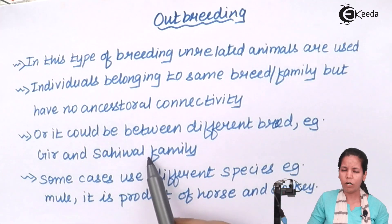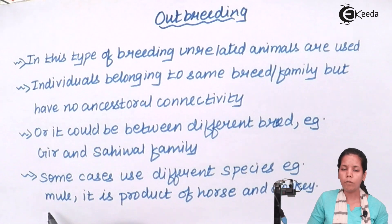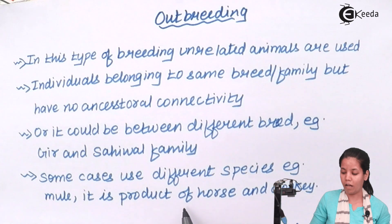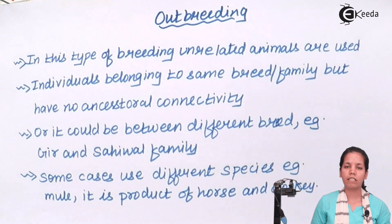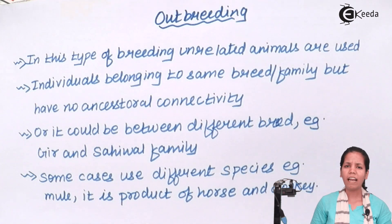In certain cases — not just in animals but in certain other species — the mule is an example of outbreeding in which entirely different species are used. The mule is a product of a horse and a donkey. It has a combination of both: it can run fast like a horse and carry weight just like a donkey. So students, in this part of the chapter we studied outbreeding and how it is precisely different from inbreeding.